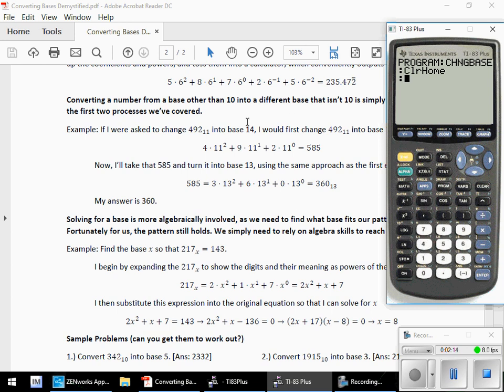As you see in our demystified document here, if I'm changing from one base into another, well the first thing I would do is I would change the original number into base ten. So I need to know the number of digits that I have in that original number. So program go to I/O for input output, I want to input.